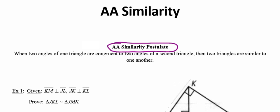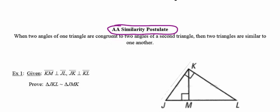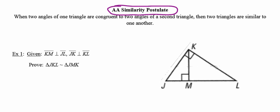So in order to prove two triangles similar, you need to find two pairs of congruent angles. That's it, no pairs of congruent sides.